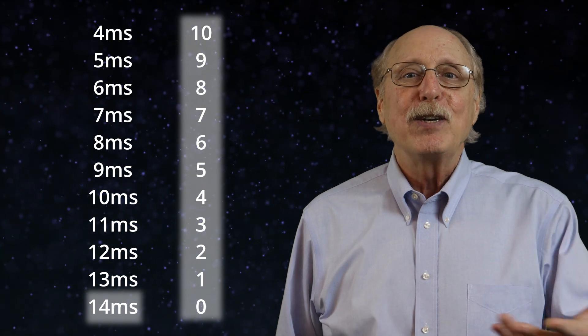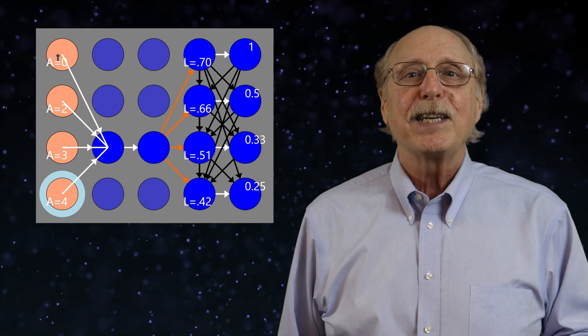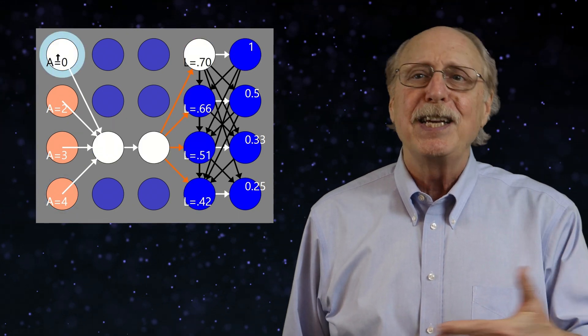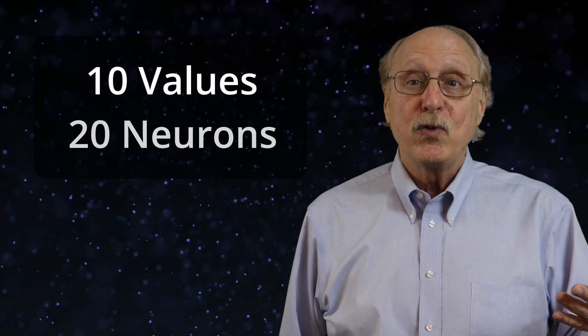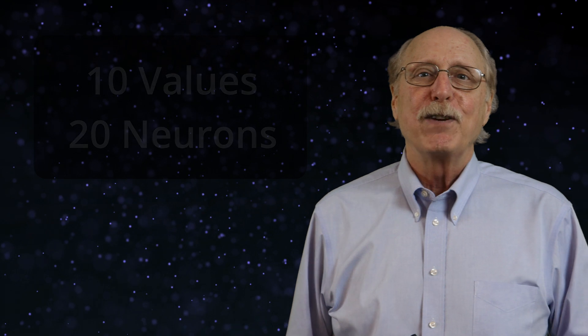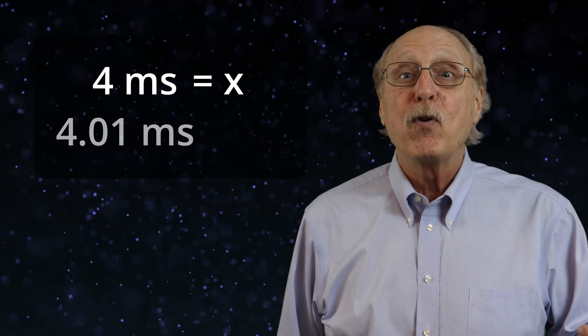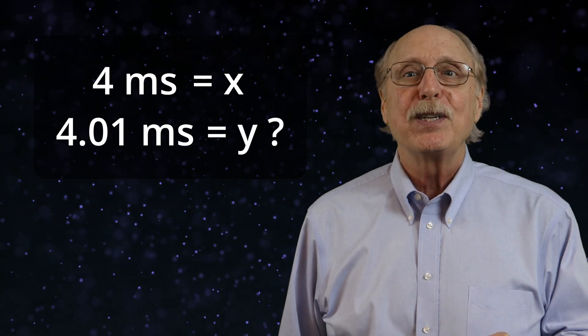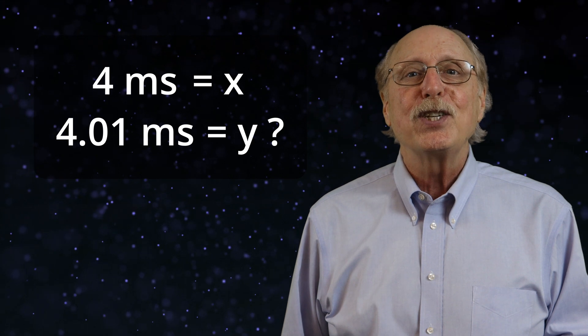Neurons are actually very good at this type of differentiation, and neuron pairs can easily detect if a spike timing is at any specific given level. If you wanted to detect 10 different values, you need 20 neurons. You might ask, if 4 milliseconds represents one value, why not let 4.01 milliseconds represent another?